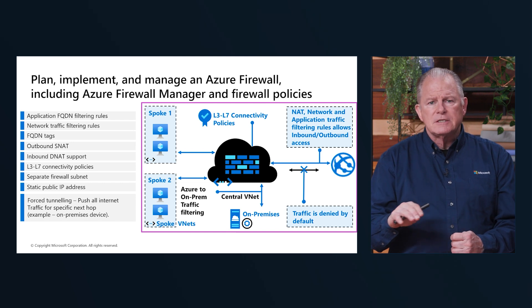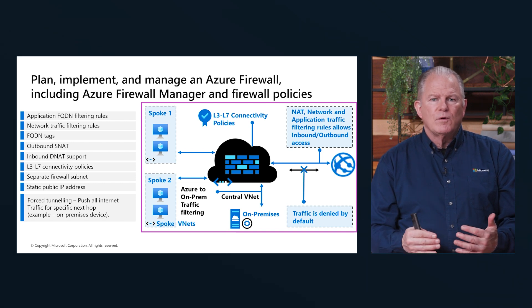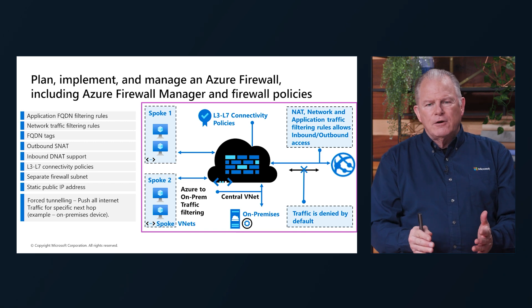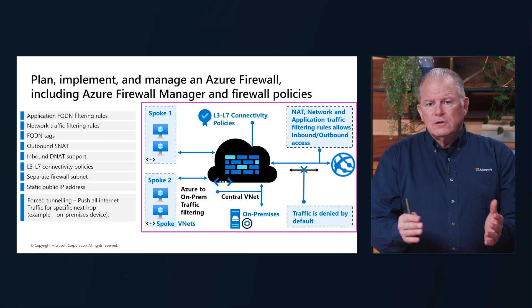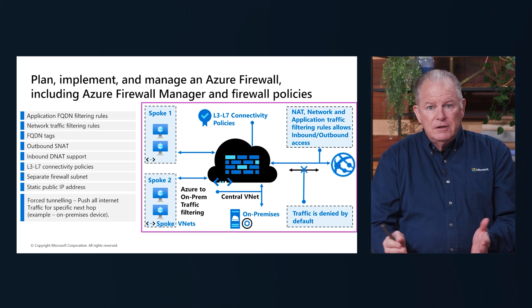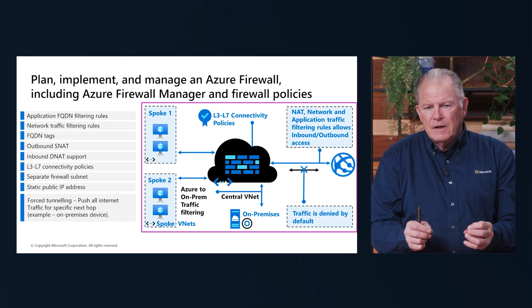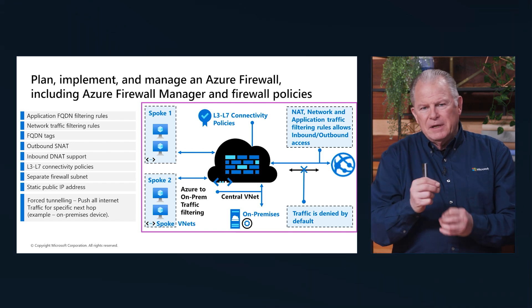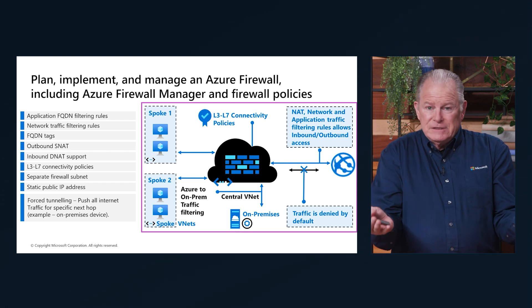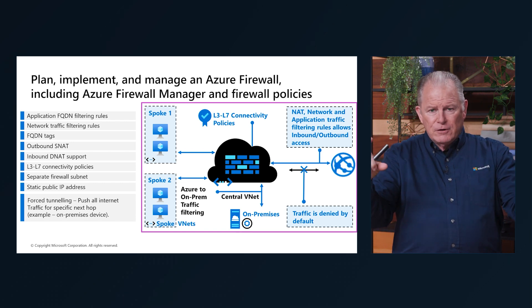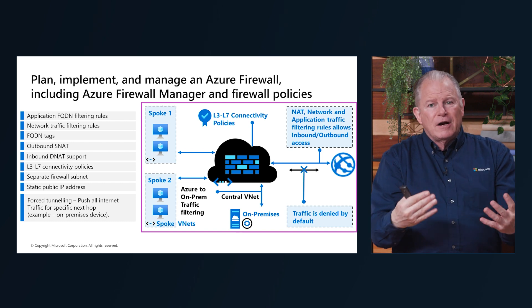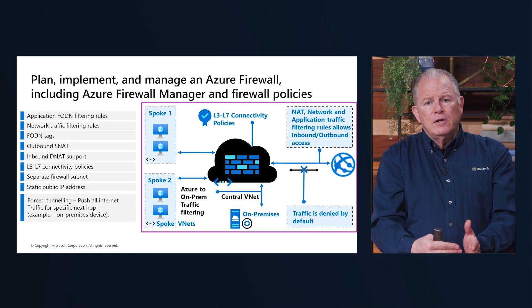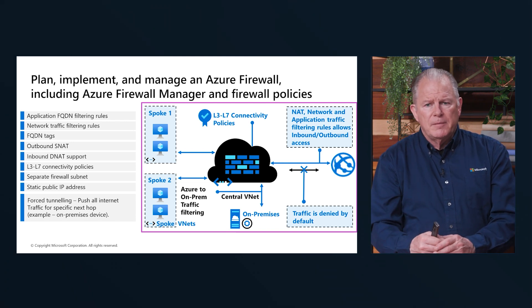A firewall has to exist within a subnet and be deployed to a network segment, then through VNet peering you can access other resources. One important clarification: the slide says 'traffic is denied by default' — that's technically not accurate. Traffic isn't allowed by default, which is effectively secure by default. Denies override allows, so if you explicitly deny everything and then try to allow something, the deny happens first and blocks access. Instead, simply not allowing traffic achieves the same secure-by-default result; use denies to prove the exception, not as the rule.